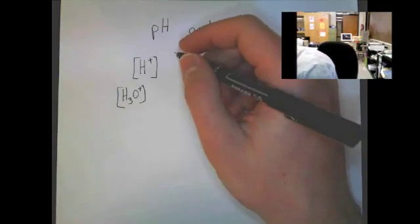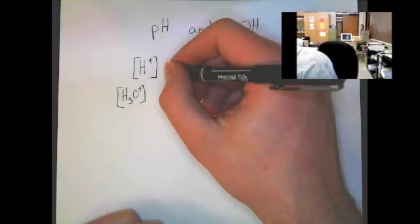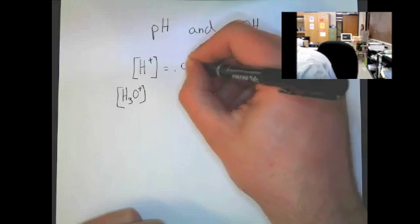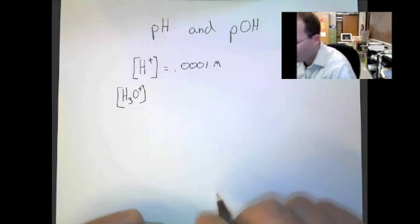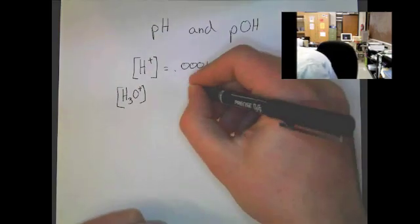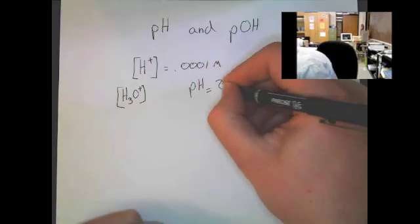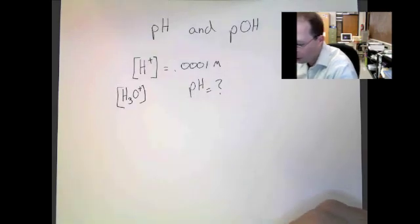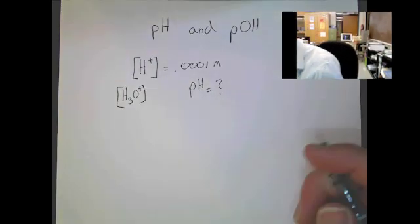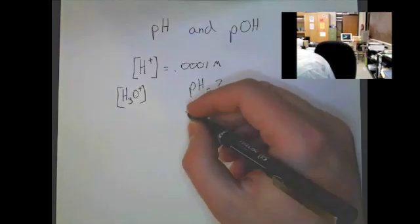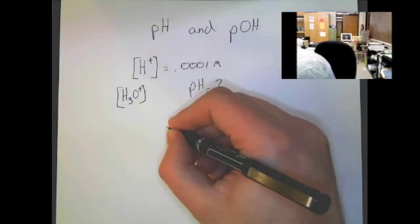Now, let's say that we have a concentration of hydronium of 0.0001 molar and we're told we need to find what the pH is. Well, there's a really simple way to do this. Let me show you. All you need is one simple formula, and that is this: